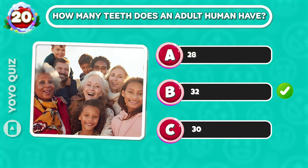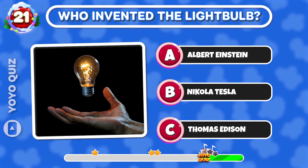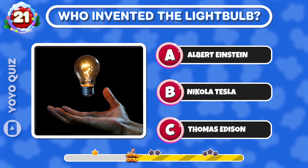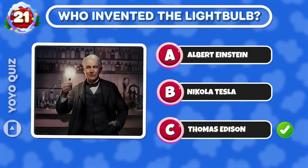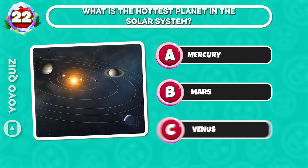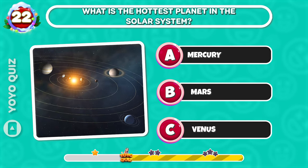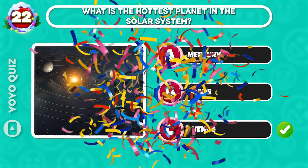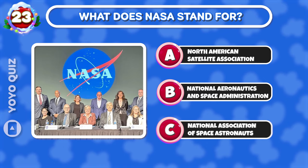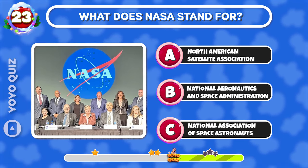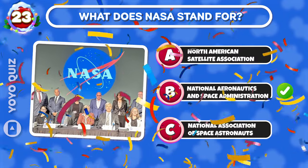Round 18: In what decade was the internet created? It's A. Round 19: How many teeth does an adult human have? Round 20: Who invented the light bulb? C is the correct answer. Round 21: What is the hottest planet in the solar system? Good job, it's C.